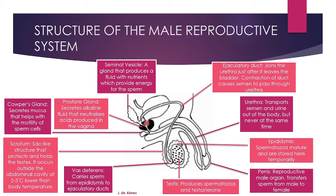There are three glands. The seminal vesicle produces a fluid with nutrients which provide energy for the sperm. You must know the functions of all three glands because they can ask you to name each gland and its specific function. The prostate gland secretes alkaline fluid that neutralizes acids produced in the vagina. The Cowper's gland secretes mucus that helps with the motility — the movement — of sperm cells.